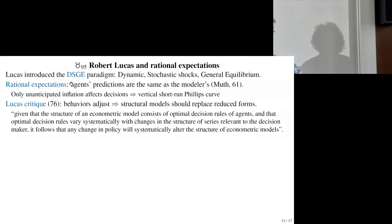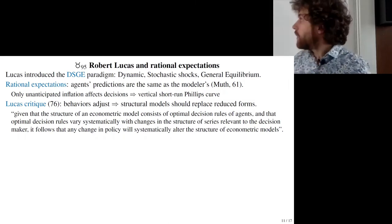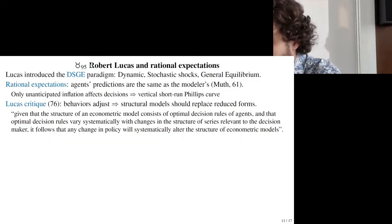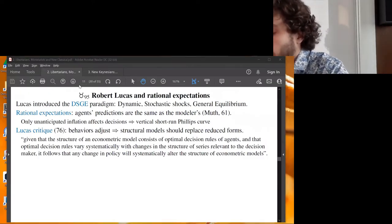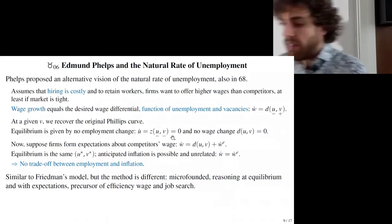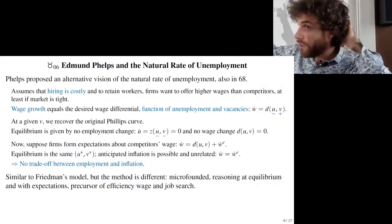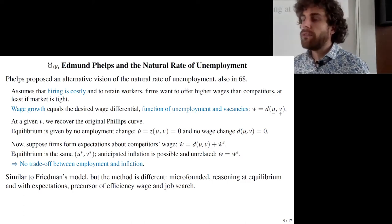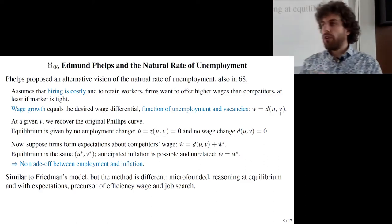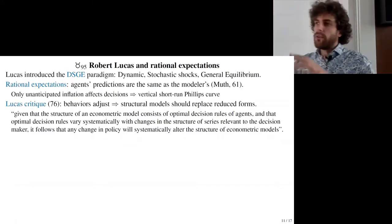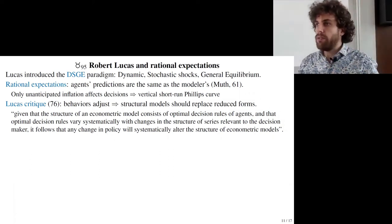On structural versus reduced form: the Phillips Curve is an example of a reduced form — a relationship between unemployment and inflation. A structural model like Phelps's Phillips Curve, by contrast, models firms' hiring decisions and workers' labor supply decisions — the optimization of each agent. In a reduced form model, you model just the relationship between aggregate variables without knowing where it comes from.